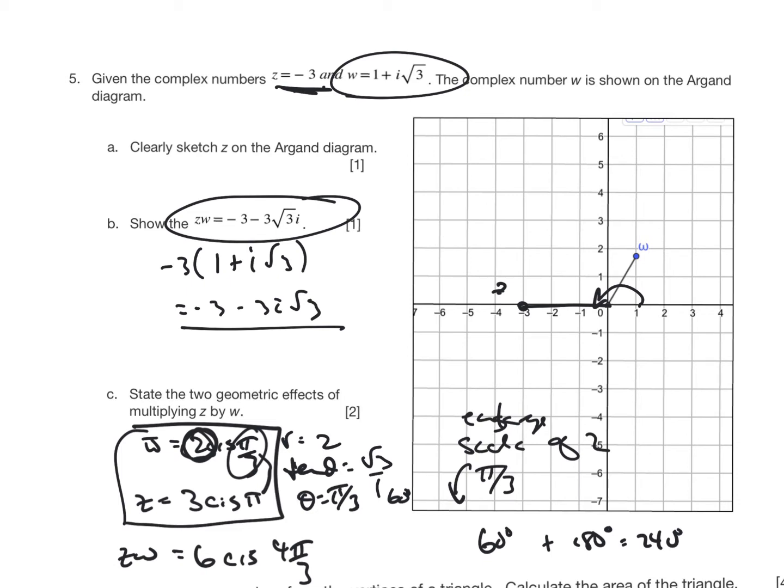And so I end up with negative 3, negative 3 root 3. It's going to end up being probably a value right here. Let me tidy this up a little bit. So it's going to get a value that ends up being right here. And recognizing this is pi by 3, as is this is pi by 3, so this actually is a straight line. And this is zw.